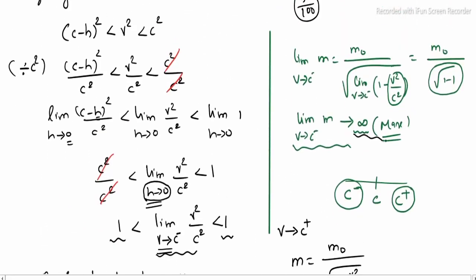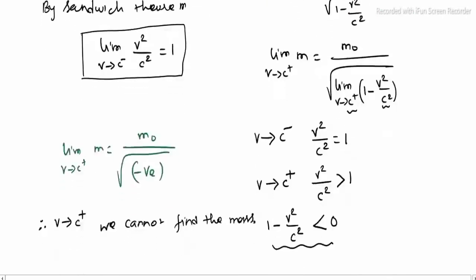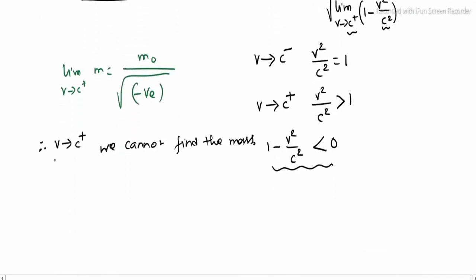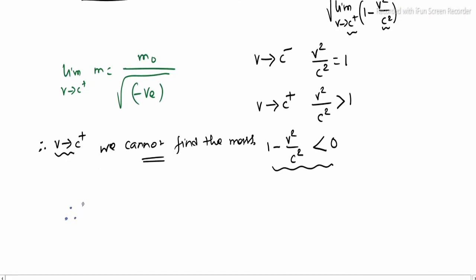So the left-hand limit gives us a valid result (m tends to infinity), but the right-hand limit requires taking the square root of a negative number, which is undefined in real numbers. This is the reason why only the left-hand limit is necessary and valid for this physical problem.